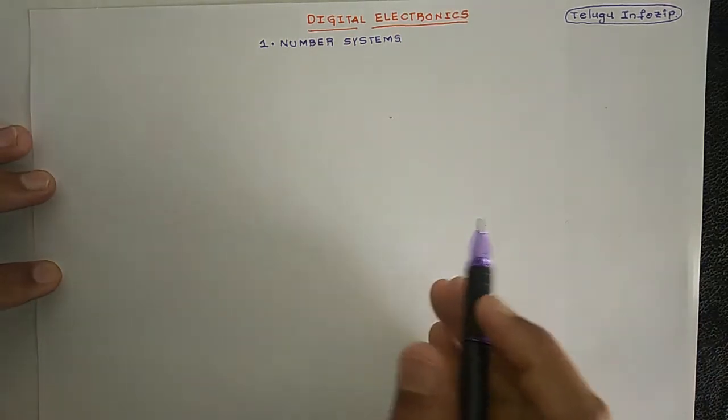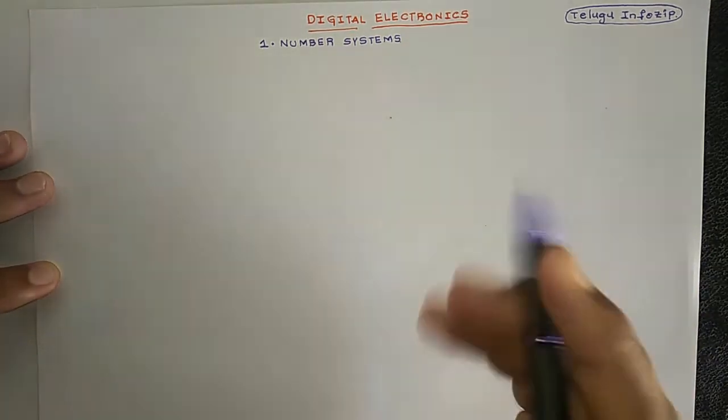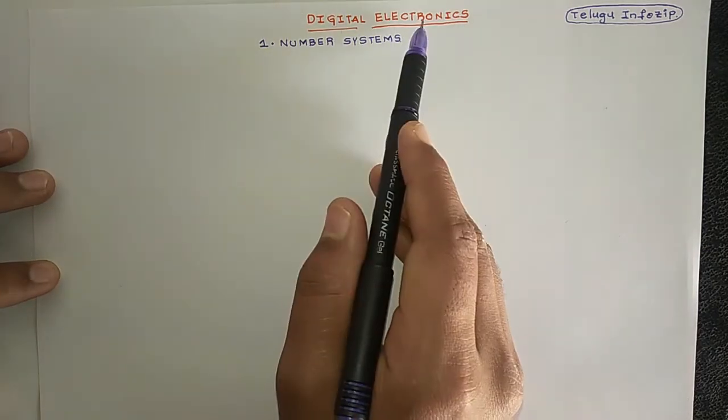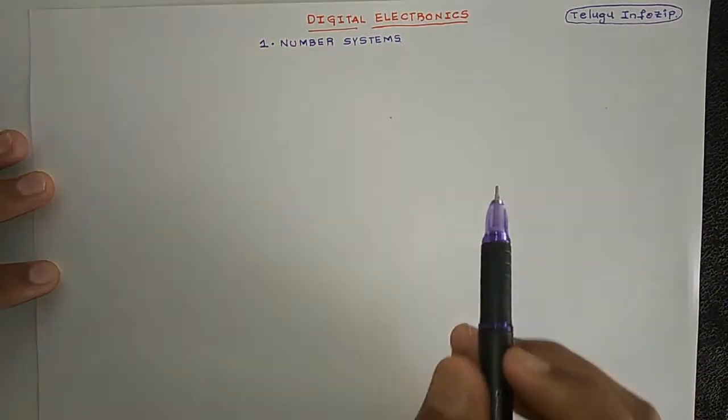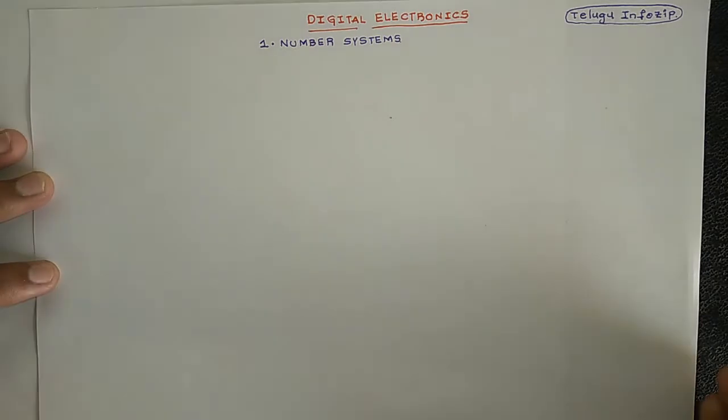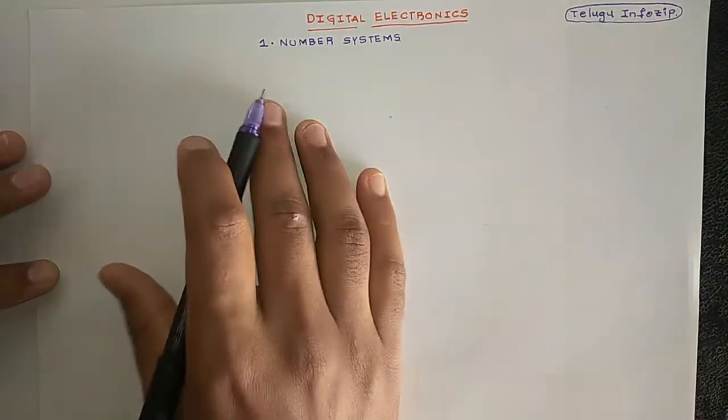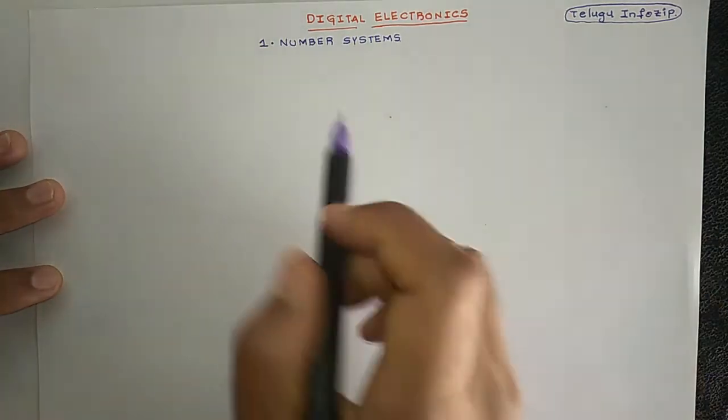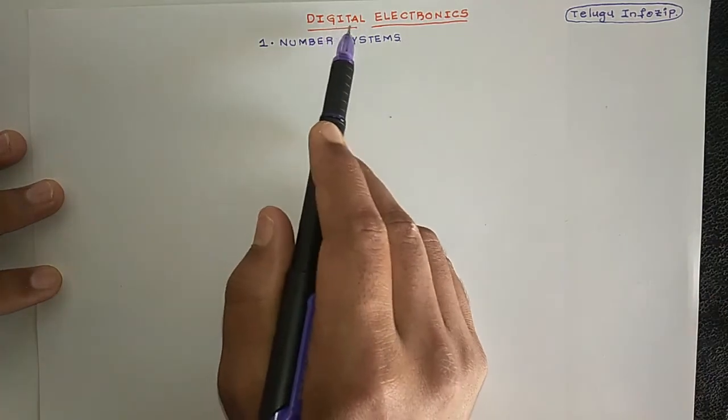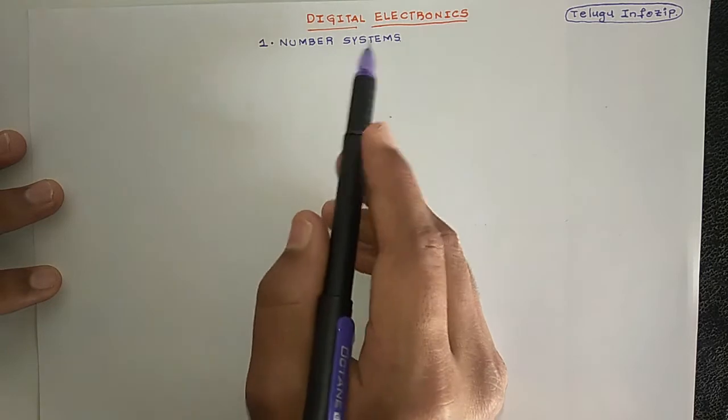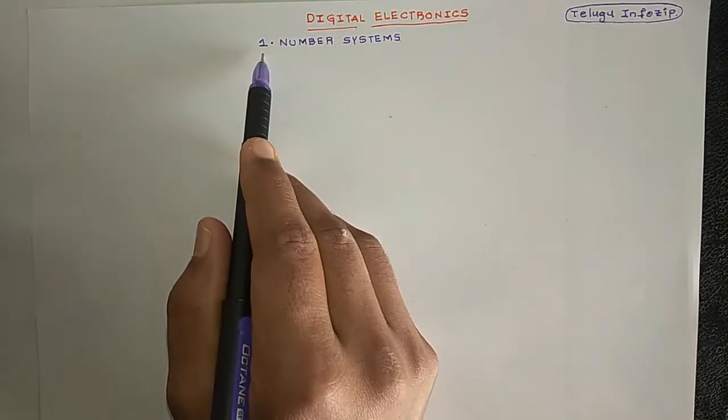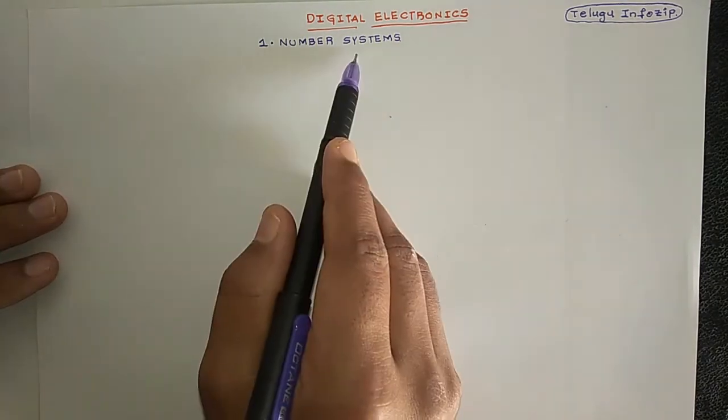Welcome to Telugu Infosive. In this playlist, the main subject is Digital Electronics. Digital Electronics has different names: Digital and Logic Design (DLD), Switching Theory and Logic Design. The subject names are different, but the topics are the same. If you generalize it, Digital Electronics is the name of the playlist. The first lesson is Number Systems.